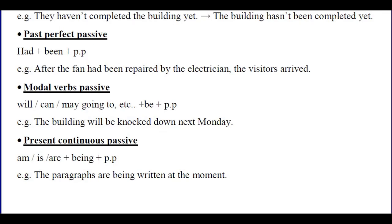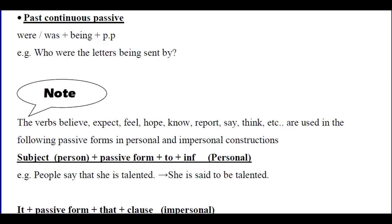Present continuous passive: 'The paragraphs are being written at the moment.' Past continuous passive: 'Who were the letters being sent by?' Here we have verb to be plus '-ing' for the continuous form — 'were being' plus past participle. So: 'The letters were being sent by...'